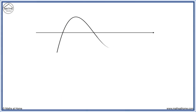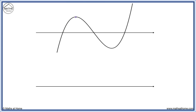Here is a cubic. We first mark the turning points and put points on the axis below them on our derivative graph. Before the first point, the graph is increasing, so the derivative is above the axis.